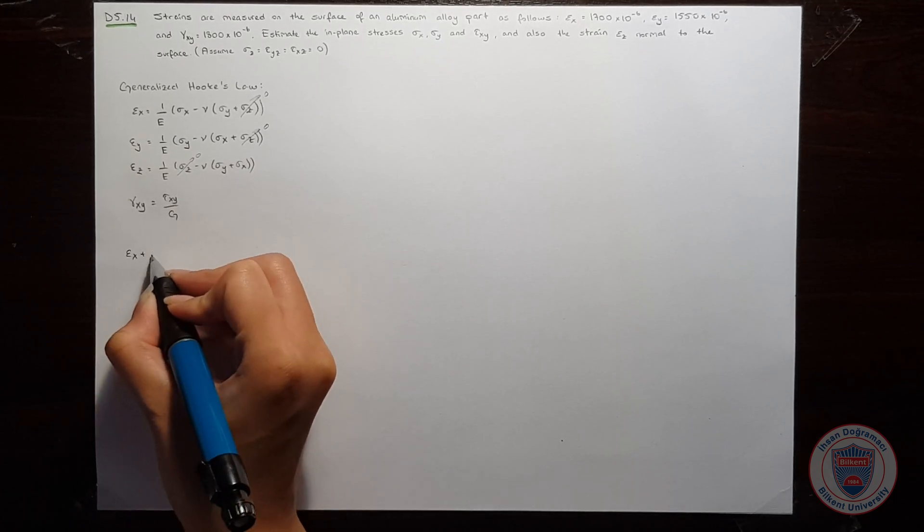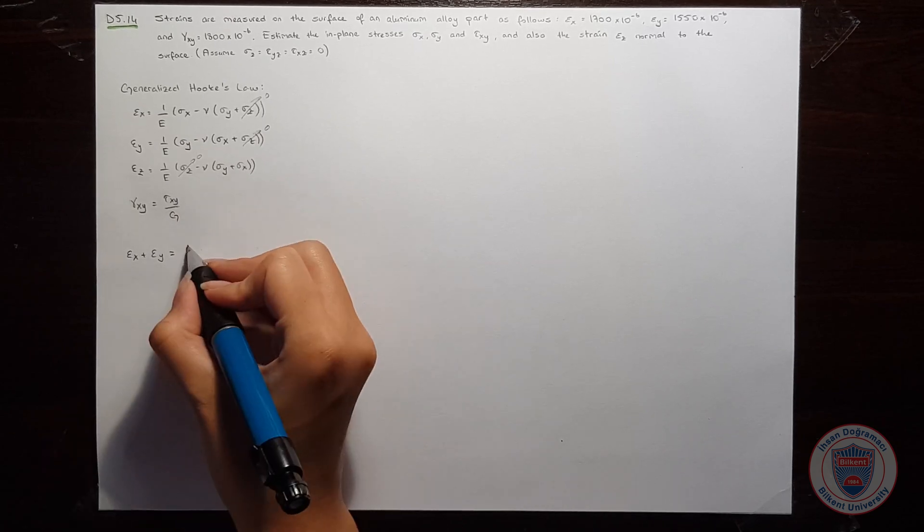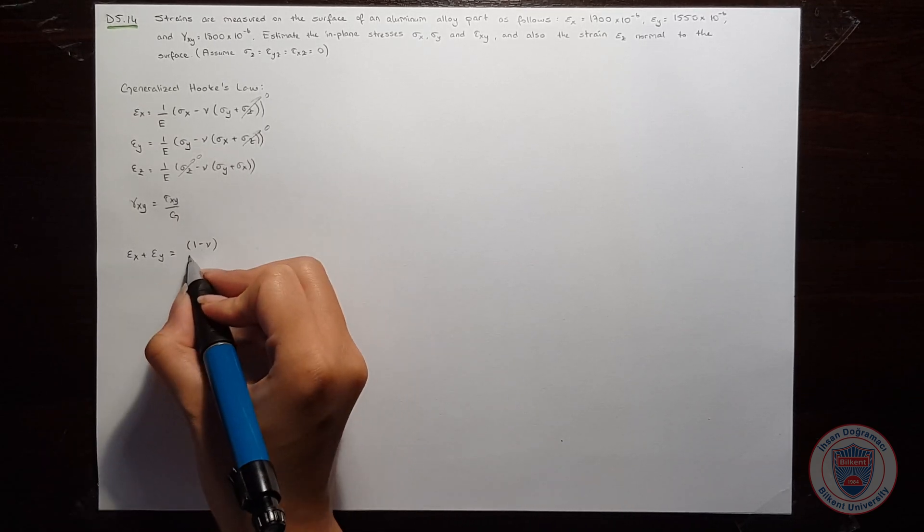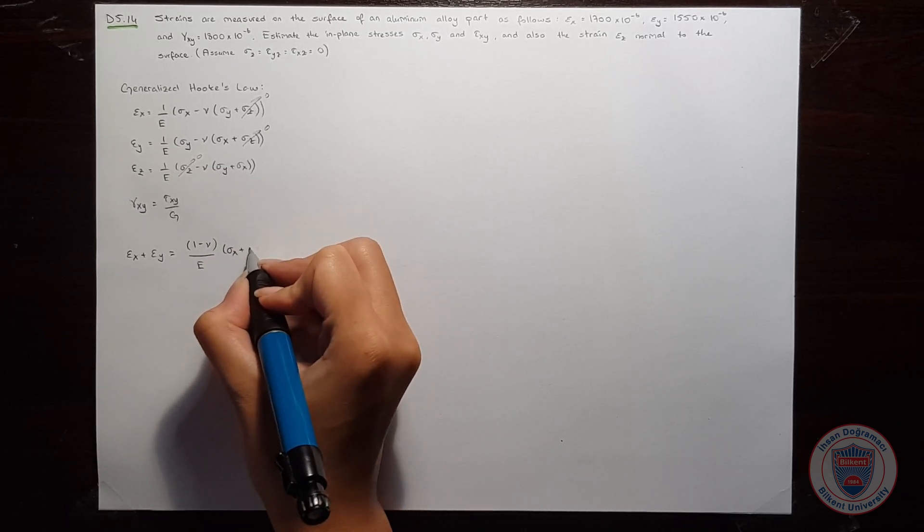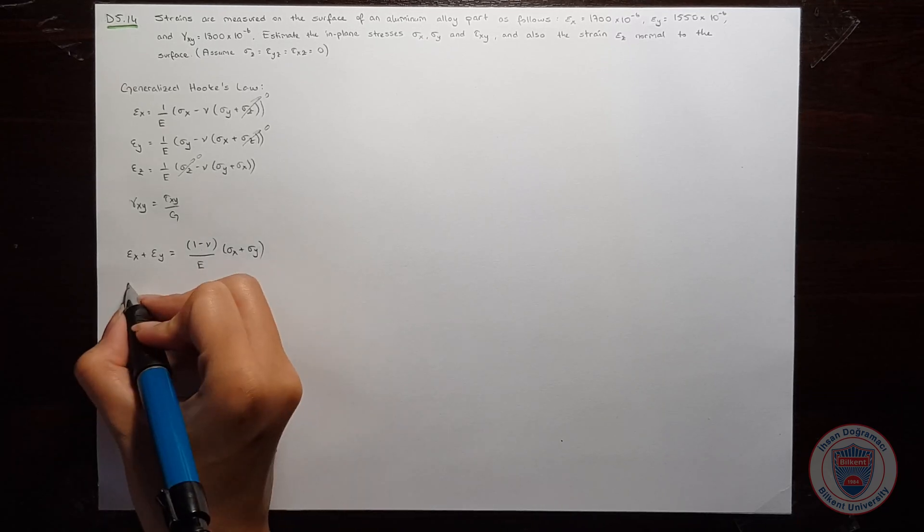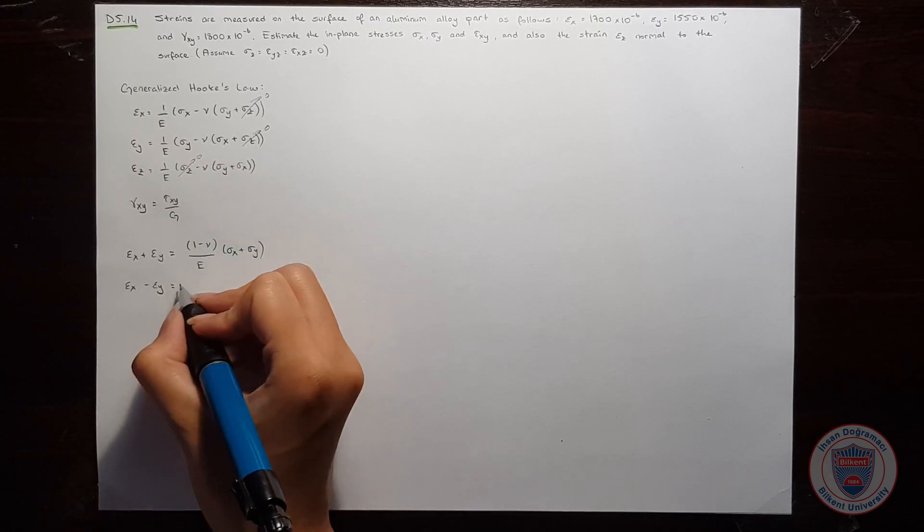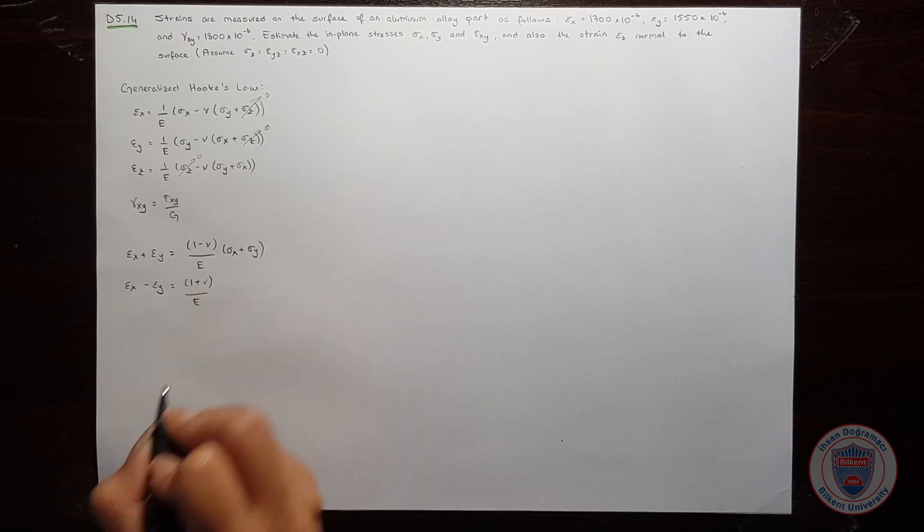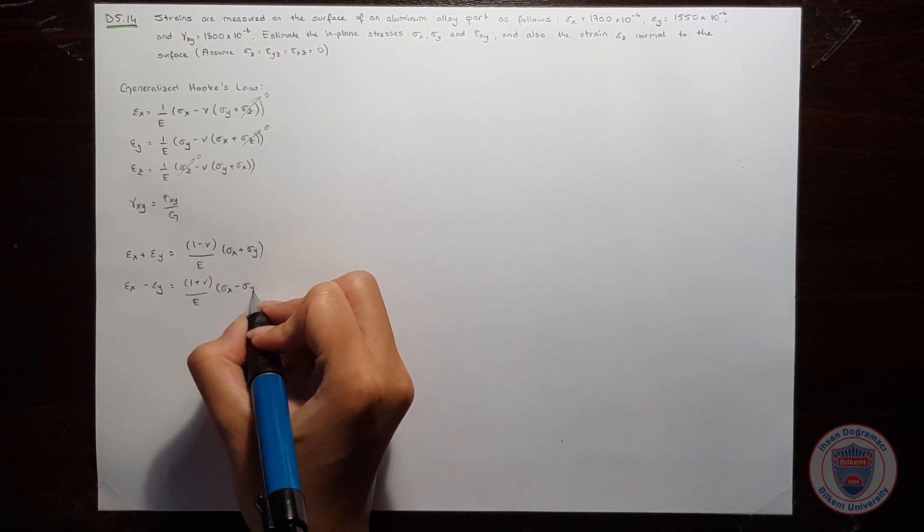We know that epsilon x plus epsilon y is equal to 1 minus Poisson's ratio over Young's modulus times sigma x plus sigma y. And we know that epsilon x minus epsilon y is equal to 1 plus Poisson's ratio over Young's modulus times sigma x minus sigma y.